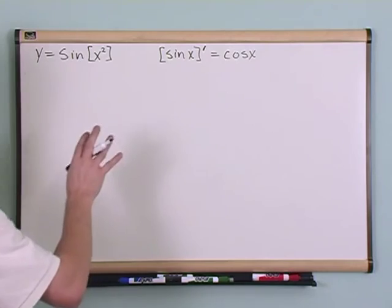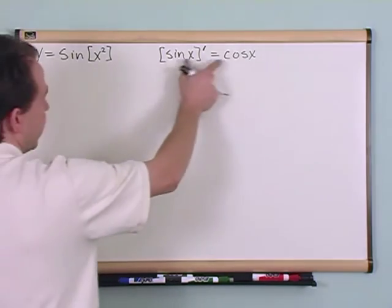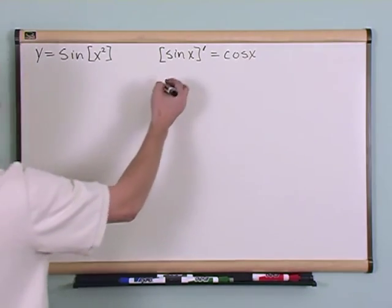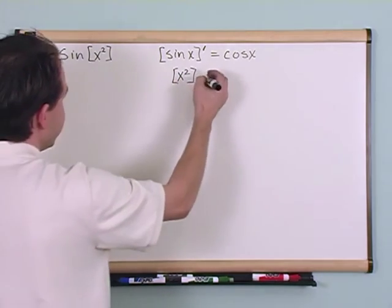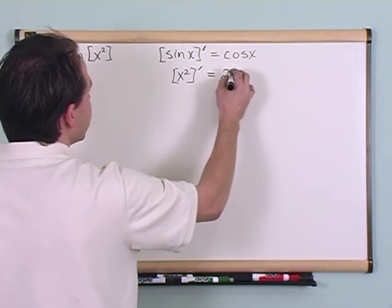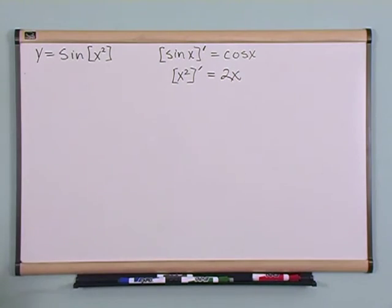But work with me here, and this will be clear. You know this fact is true. And you also know that if you were to take the derivative of x squared, by itself, just by itself, you would get 2x. I taught you both of those things individually.